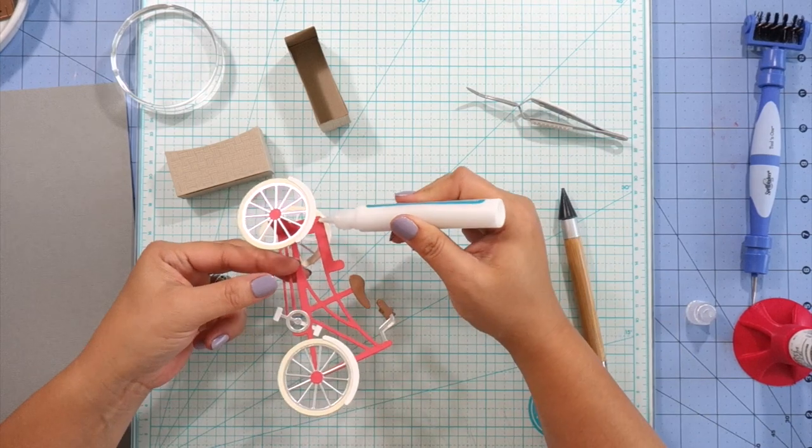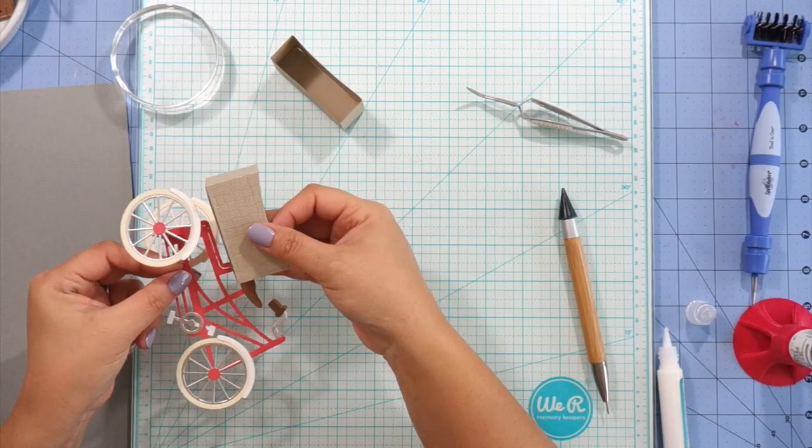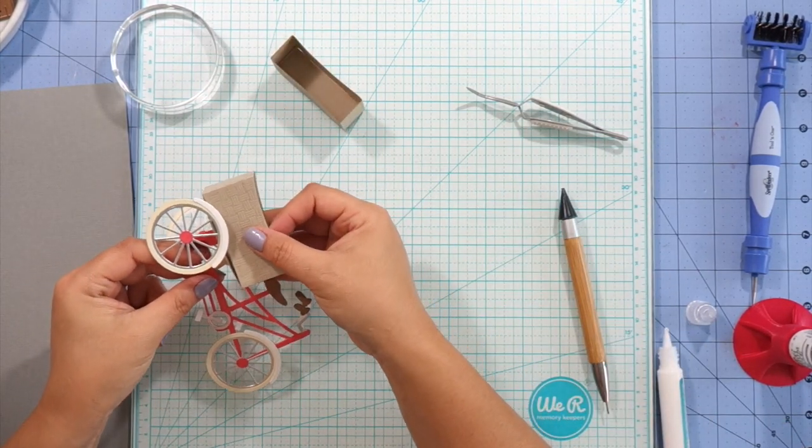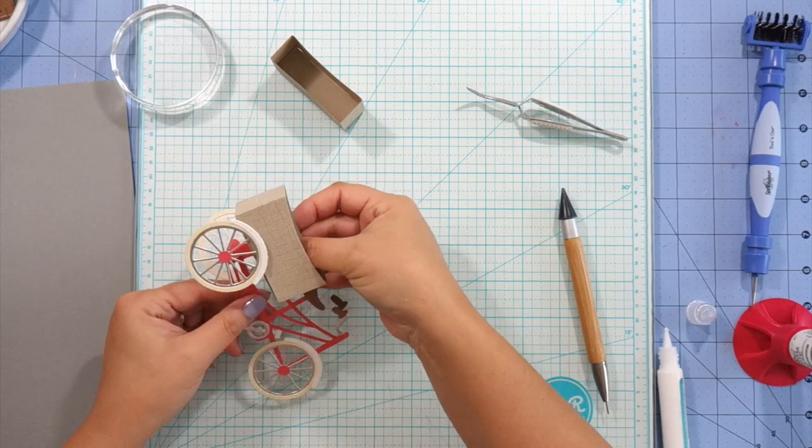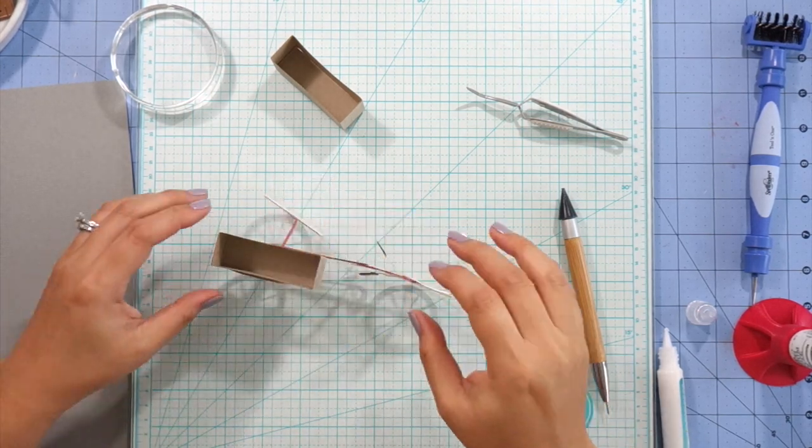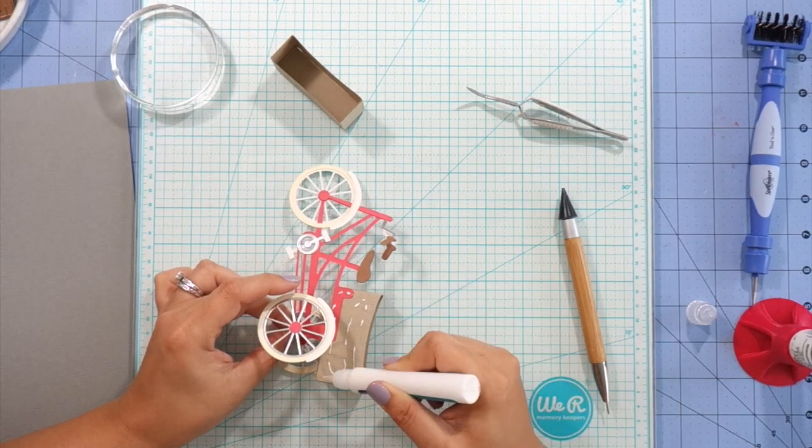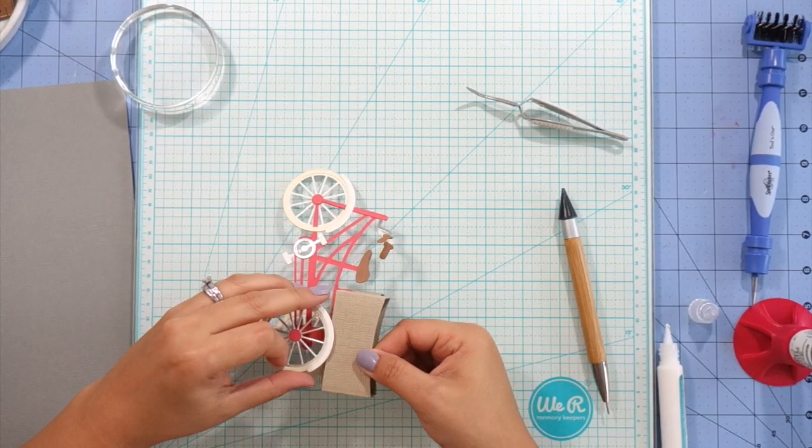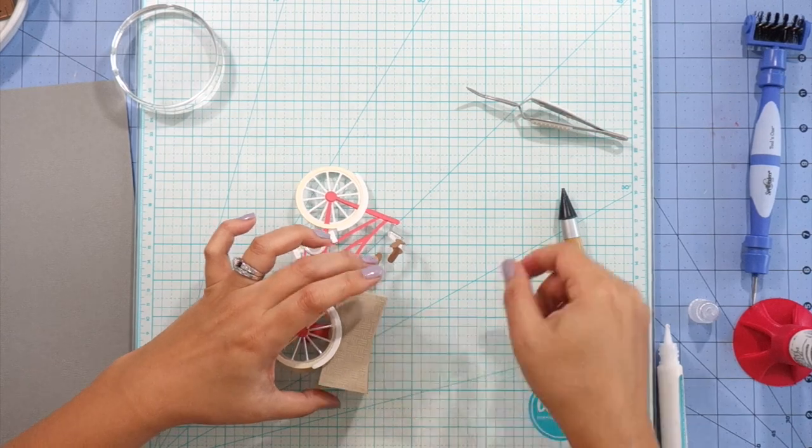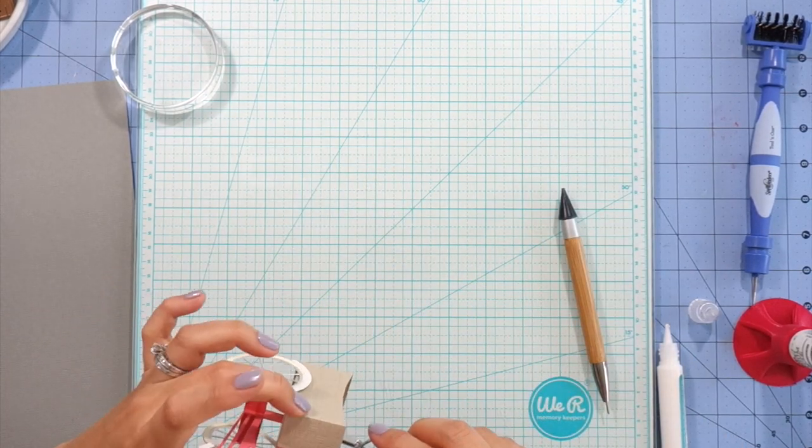And now I'm going to glue on my baskets. If you wanted this to be a foldable tricycle so that you could stick it in an envelope, all you would have to do is leave the bottoms off of these baskets and they would fold. I'm just going to use them as decoration and I wanted to put the bottoms on the baskets in case I wanted to fill them.